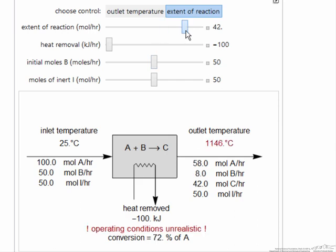If I go to high enough extent of reaction, the temperature is too high - above 1000 degrees is not realistic for this system. If I wanted to get that high an extent of reaction, I'd have to remove heat from the system. All we're doing here is mass and energy balances to help us understand the behavior of a reactor.